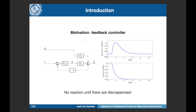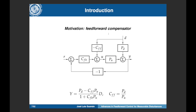In the case of the classical feedforward control approach, the idea is to avoid this delay by modifying the control signal before the process output is affected by the disturbance. In this way, we are able to remove the disturbance effect before it impacts the process output. The idea is very simple: since we can measure the disturbance, we use this information through a feedforward compensator and add it to the control signal.